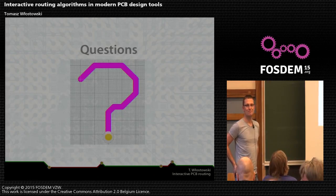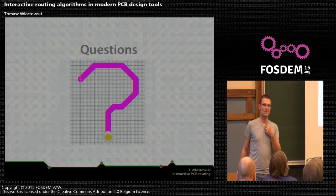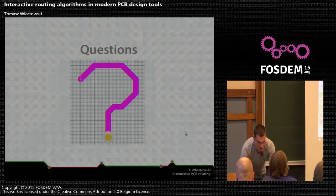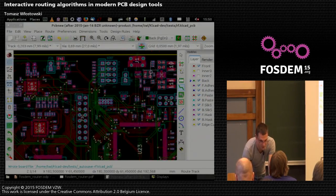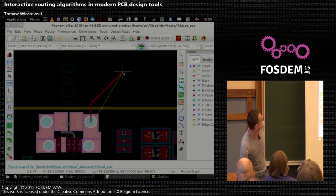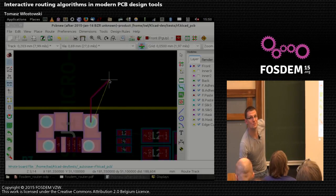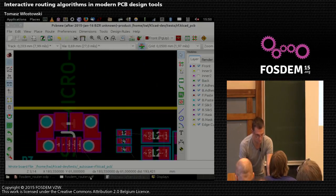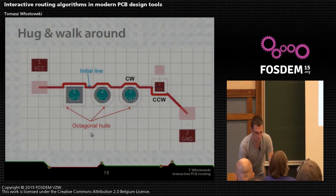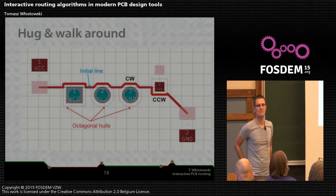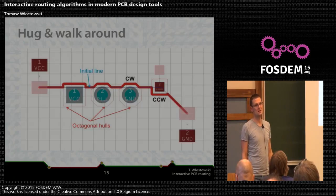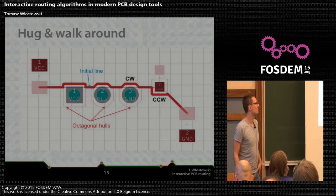Q&A: The question was how we decide which direction the headline goes. The direction of the initial path for shoving is determined by the cursor. For the hug algorithm specifically — for example whether to go straight down or diagonally — whether to start diagonal or straight is a user input: you can switch the posture of the track, which gives you a bit more control.